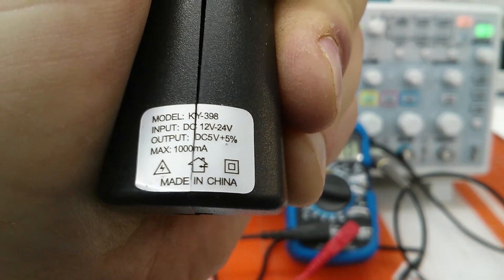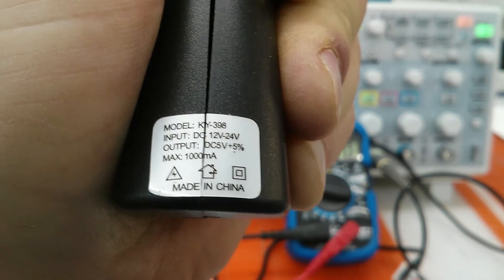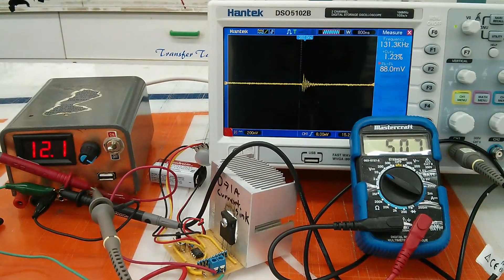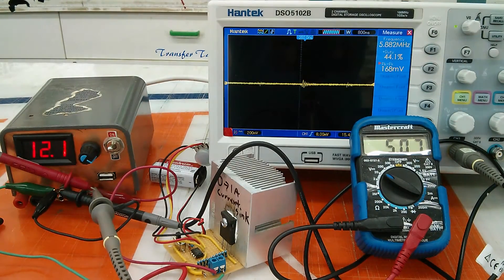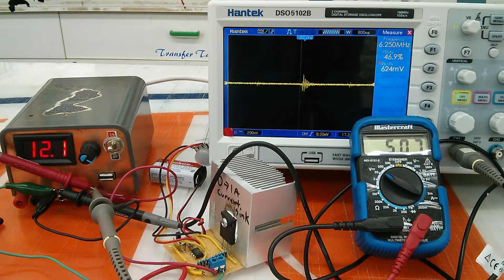And in case anyone was wondering, the model is KY398, the piece of junk here. My power supply that I built, my bench power supply, I added a fixed 5 volt rail on it and put a USB port on for charging. Just as a quick comparison here.